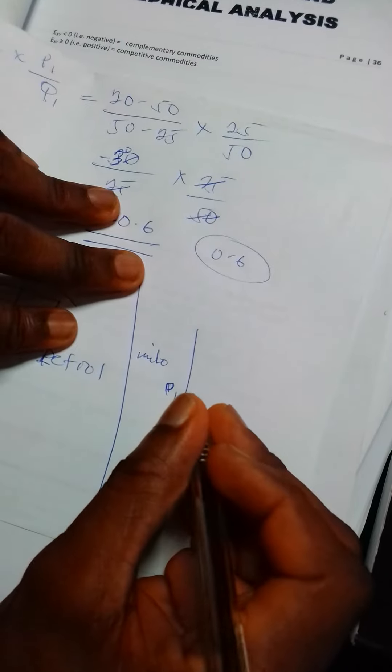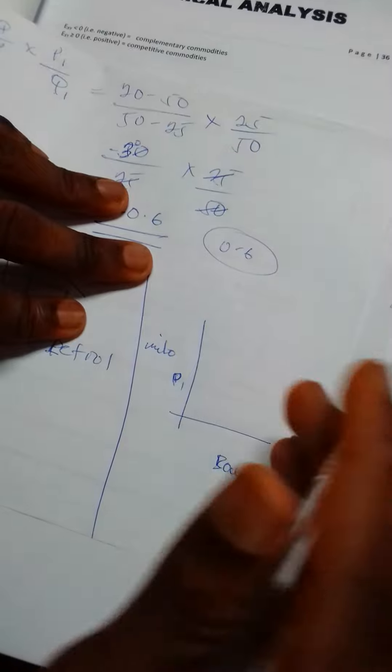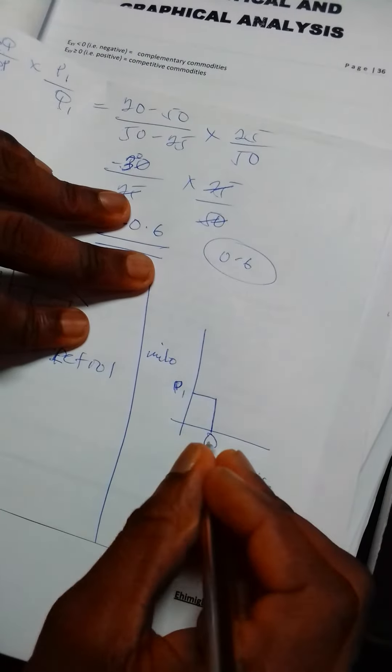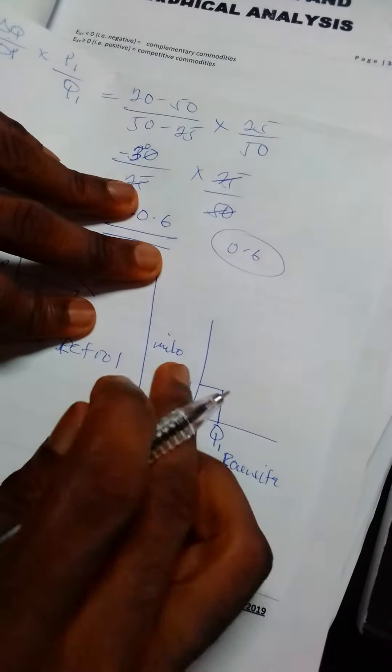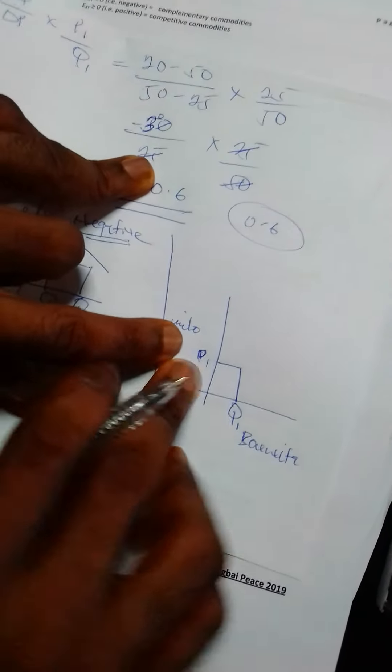If the price is at P1, people will buy more of Milo. So since they are buying more of Milo, they will be buying less of Bournvita simply because Milo and Bournvita serve the same purpose.